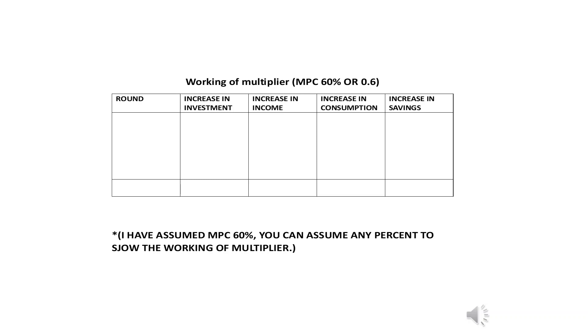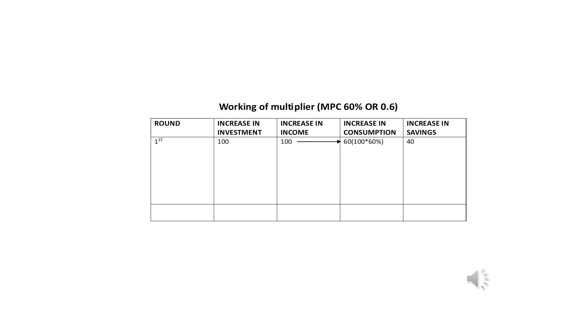Now let's look at the tabular representation of the investment multiplier, which is very useful for answering exam questions. We need five columns: the first for rounds, the second for increase in investment, the third for increase in income, the fourth for increase in consumption (which depends on MPC), and the fifth for increase in savings.